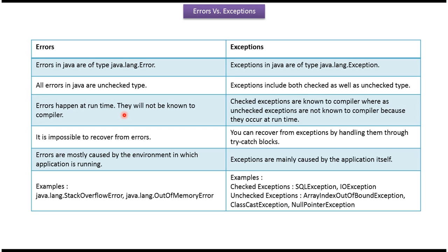Errors happen at runtime — they will not be known to the compiler. Checked exceptions are known to the compiler, whereas unchecked exceptions are not known to the compiler because they occur at runtime.